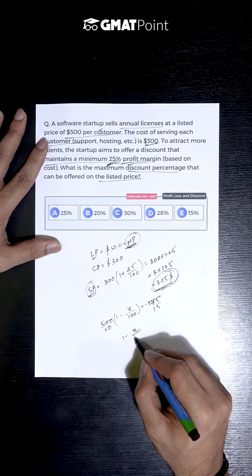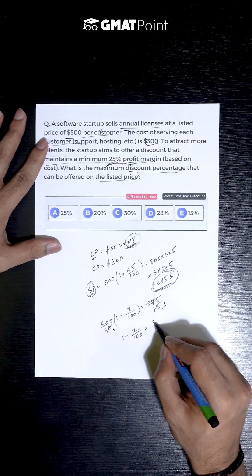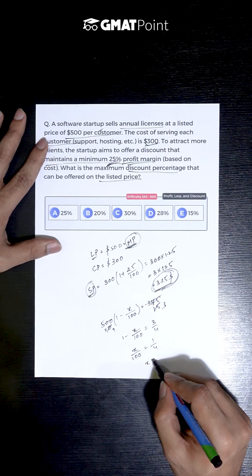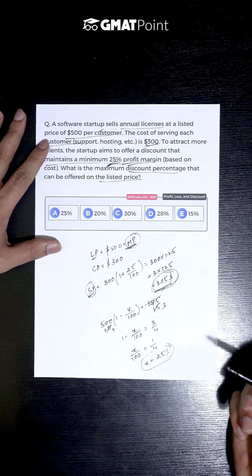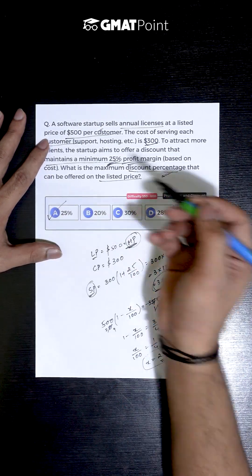The value of X by 100 is nothing but 3 by 4, and we get the value of X by 100 to be 1 by 4, and the value of X can be calculated as 25%. So the maximum discount percentage can be calculated as 25%.